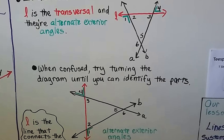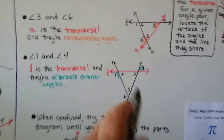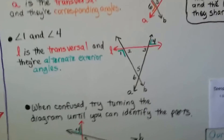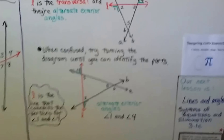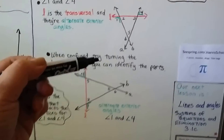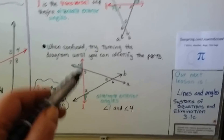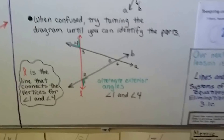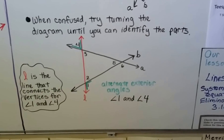When you're confused, try turning the diagram until you can identify the parts. If you're used to seeing the transversal going vertical and you see something on a slant, just turn the drawing so you can see what's going on. For angles 1 and 4 with line L as the transversal, if you rotate the drawing 90 degrees, you can clearly see they share line L, are on opposite sides of L, and are on the outsides of A and B — so they're alternate exterior angles.